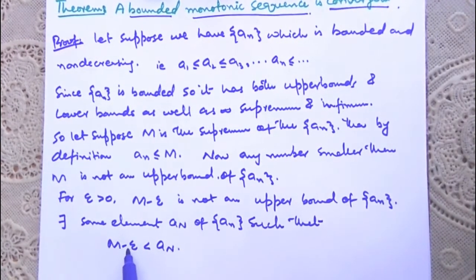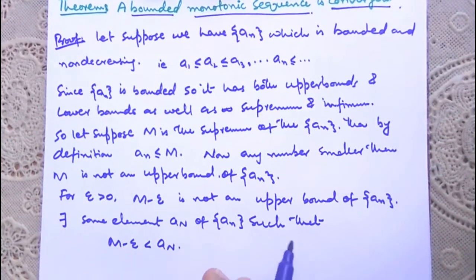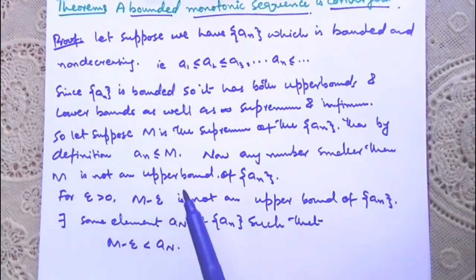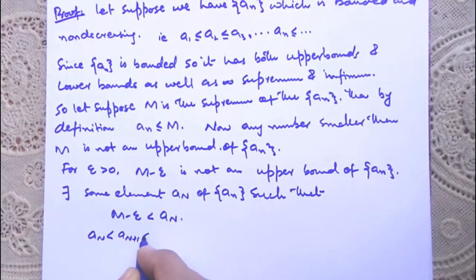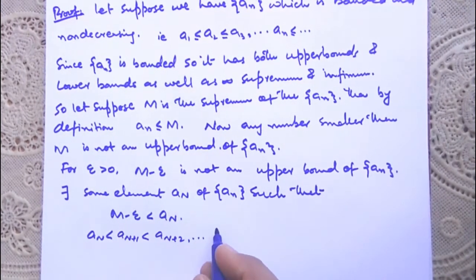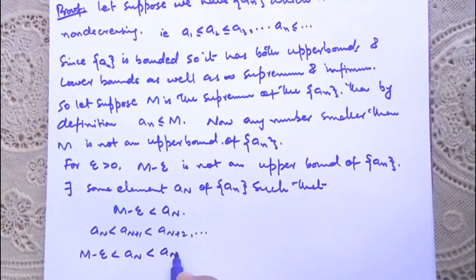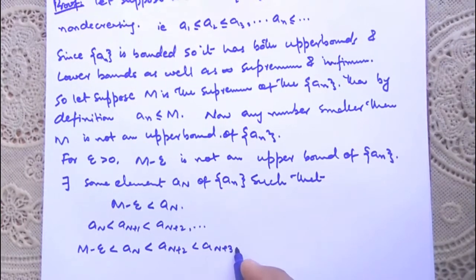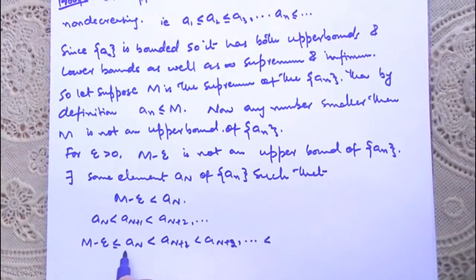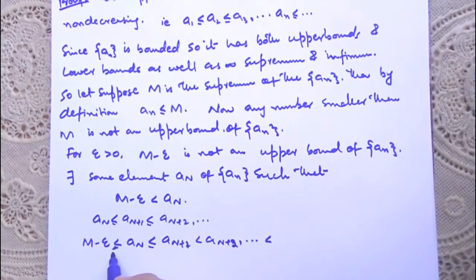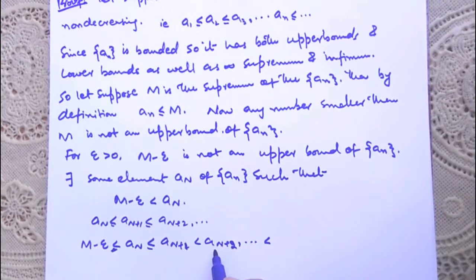There exists some element a_n in the sequence such that M − ε < a_n. Since the sequence is non-decreasing, a_n ≤ a_{n+1} ≤ a_{n+2} and so on. Therefore, M − ε < a_n ≤ a_{n+1} ≤ a_{n+2} ≤ ... ≤ M. And since M is the supremum, M < M + ε.